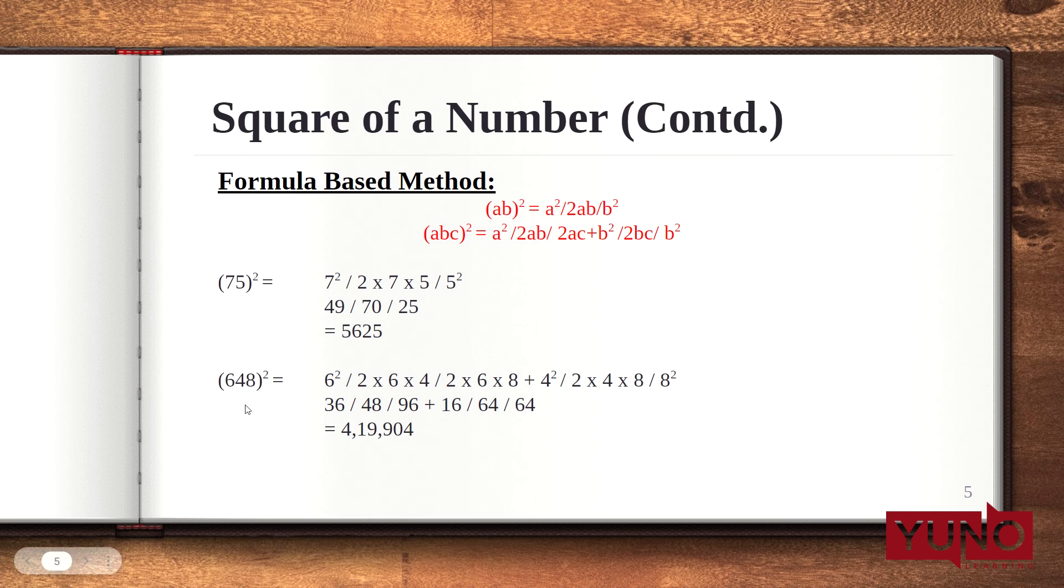Let's see an example of a 3 digit number. 648 square we need to find out. Here, 6 is a, 4 is b, 8 is c. Putting the values in the formula, we get 6² then 2 into 6 into 4. 2 into 6 into 8 plus b² that is 4². 2 into b into c that is 4 into 8 and 8².